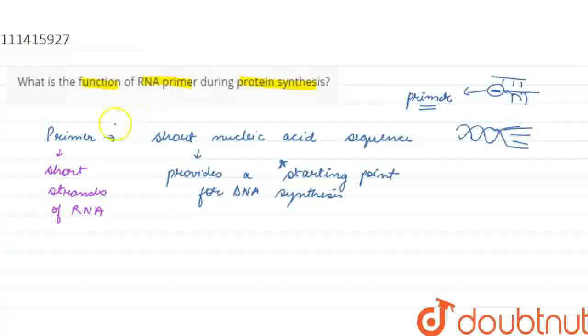Ab primer aur primer ko synthesize karne ke liye kaunsi enzyme chahiye? Primase. Enzyme required, that is primase, aur jo primase hoti hai, it is a type of RNA polymerase.